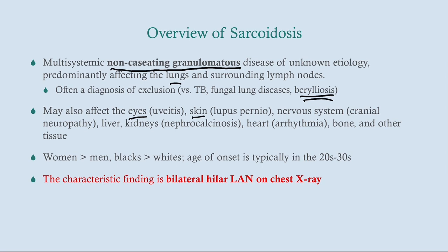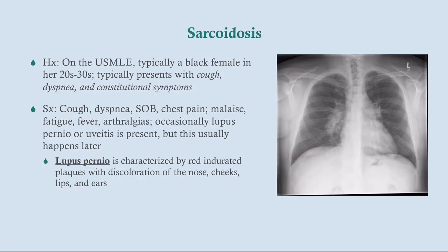Classically, women are affected more than men, blacks are affected slightly more than whites, and the age of onset is young adulthood — 20s to 30s. The characteristic finding is bilateral hilar lymphadenopathy on chest x-ray. On the USMLE, this is typically a black woman in her 20s to 30s presenting with cough, dyspnea, and constitutional symptoms such as fever, fatigue, weight loss, and joint pain.